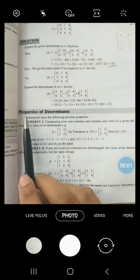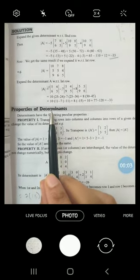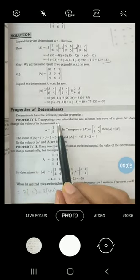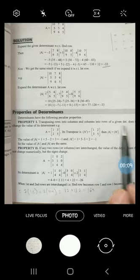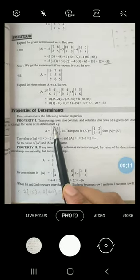So, the next topic is properties of determinants. First property is transposing rows into columns and columns into rows of a given determinant does not change the value of its determinant.